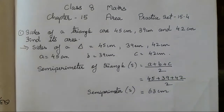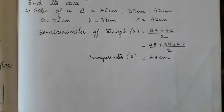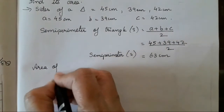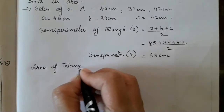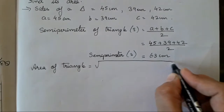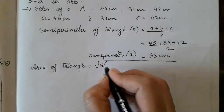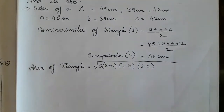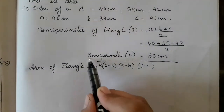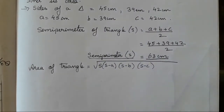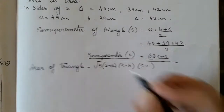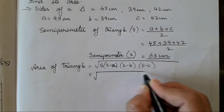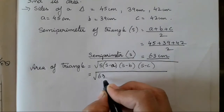Now after we get our s, we write the formula: Area of triangle = √(s × (s−a) × (s−b) × (s−c)). That is why we had to find s, the semi-perimeter — so that we can substitute into the formula. Our s is 63.